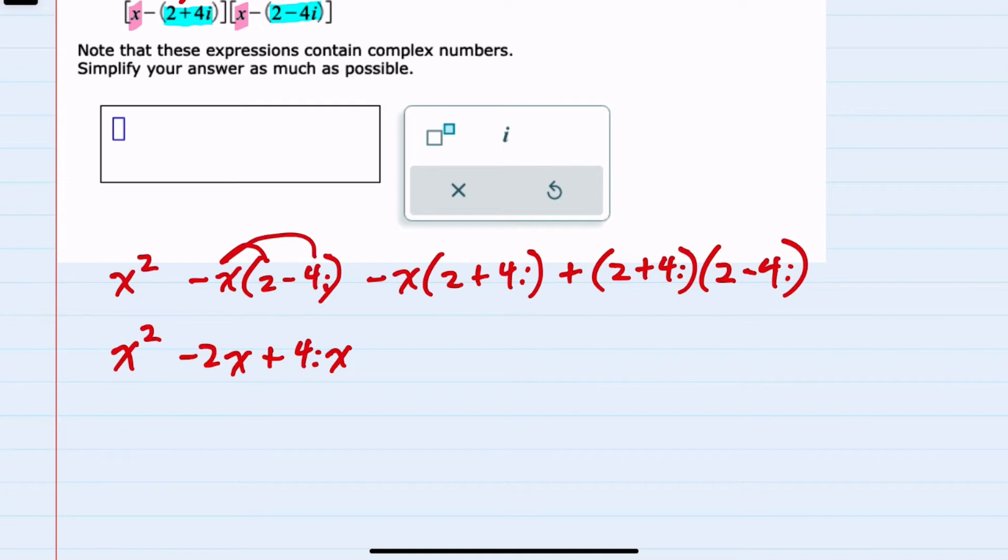The next can also be distributed here. Negative x times 2, a negative 2x. Negative x times a plus 4i would be a negative 4ix.